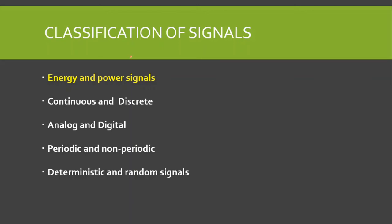Bismillahirrahmanirrahim. Assalamu alaikum. In this video we are going to study the classification of signals. Signals can be classified as energy and power signals, continuous and discrete time signals, analog and digital signals, periodic and non-periodic signals, and deterministic and random signals. We have already discussed energy and power signals in our previous video, so we are going to discuss the remaining four classifications in this video.